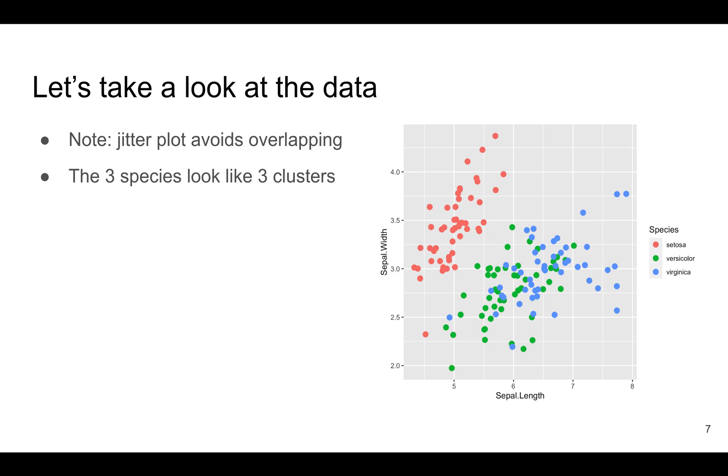Let's take a look at the data focusing on sepal length and width only. Here I've used a jitter plot, which means that I add a little bit of noise to the x and to the y axis. And this is to avoid overlapping. For example, these two blue and green points actually have exactly the same measurements.